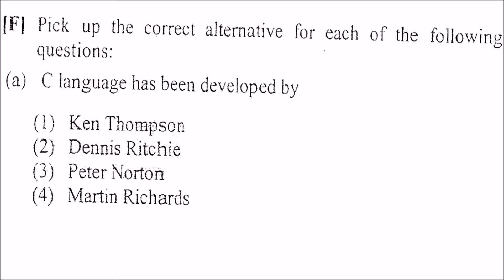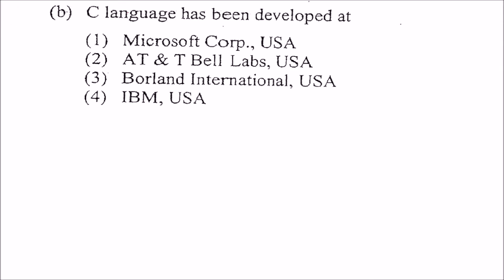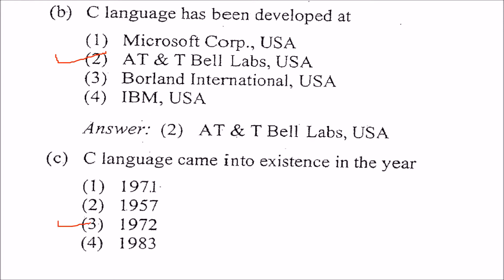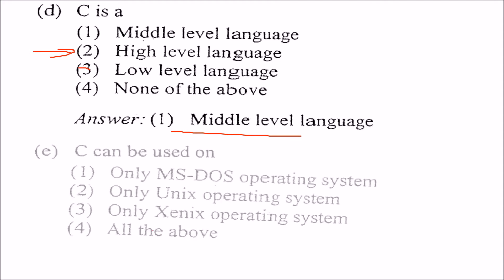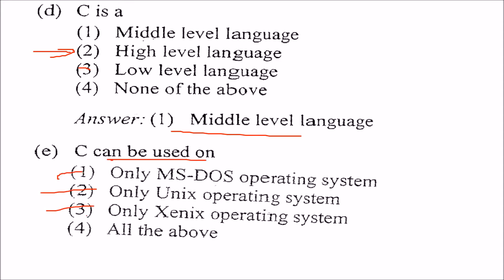Pick up the correct alternative for each of the following questions. C language has been developed by Dennis Ritchie. This is the correct answer. C language has been developed at AT&T Bell Labs. C language came into existence 1972. C is a C. Most often we will come across this question and we will try or tempted to answer this as high level language. But the answer to this question is a middle level language. Because middle level language means which is closer to your hardware. It can talk to hardware directly also. And it is English like also. So, if both characteristics are there, then the language becomes a middle level language. That is why C is a middle level language. C can be used anywhere. Any anywhere. All of the above. This is the answer.